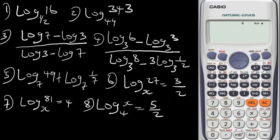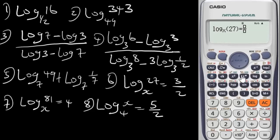Finally, question 6: find log base x of 27 equals 3/2. This is a logarithmic equation. To solve this, input the log with the base as unknown — press Alpha X — then input 27. Now bring out the equality sign: press Alpha then this equals character. Input what we have on the right side, which is 3/2.